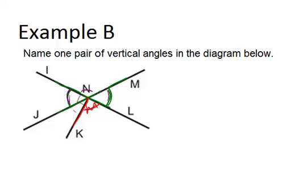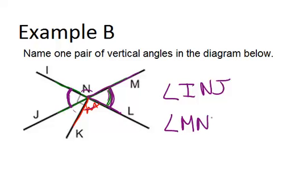Let's remember how to write those angles. We always want to name angles with three letters, unless it's really obvious what we're talking about with only one letter. If I just said angle N, you wouldn't know which angle I mean, since there are multiple angles at that vertex. So to name the angle on the left, use three letters with N in the middle: angle INJ, or you could reverse it to angle JNI. The angle on the right would be angle MNL, or LNM.